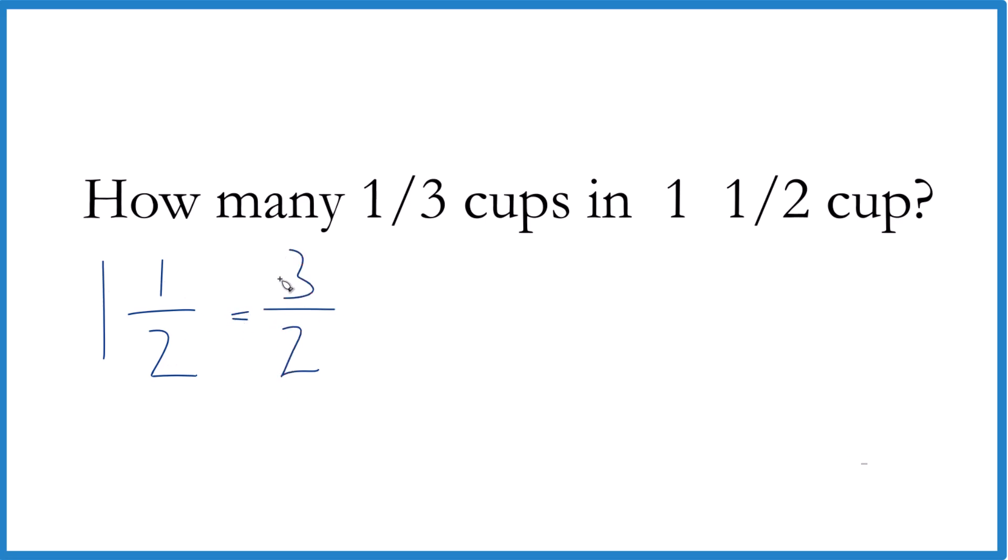Then you just bring the two across. So one and one-half equals three over two. And you could check that two goes into three one time with one left over, keep the denominator the same.